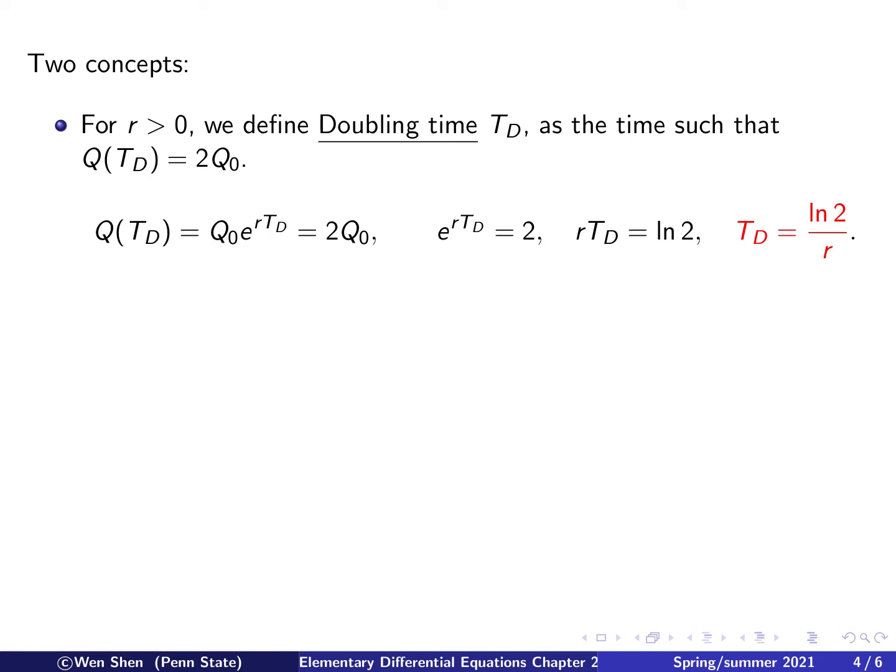Okay, so we plug in the equation. Q at TD is Q0 times e to the r, evaluated at TD, and this shall be two times Q0. Since Q0 is not 0, in this equation, we can cancel the Q0 and then we just get e to the rTD equal to 2, which I wrote here. And now in this equation, we see that the only unknown is the TD and we can solve for it.